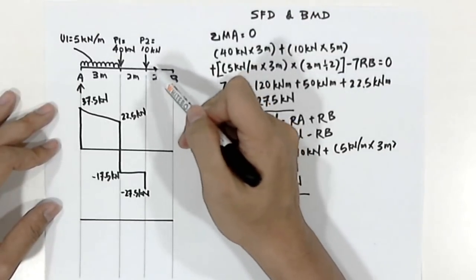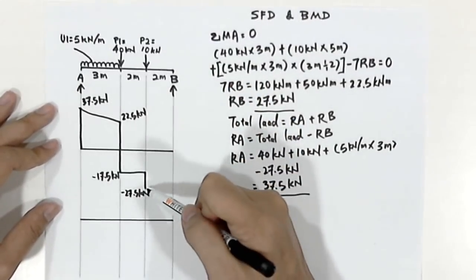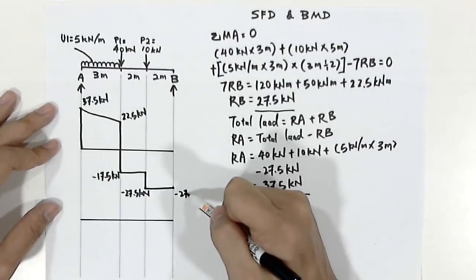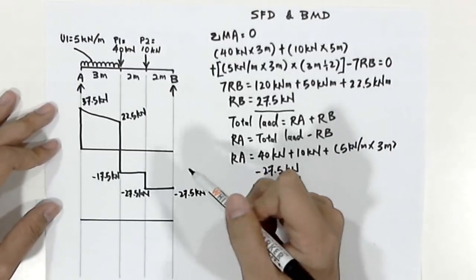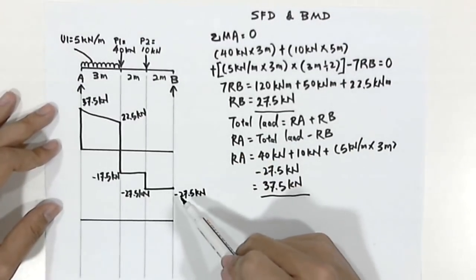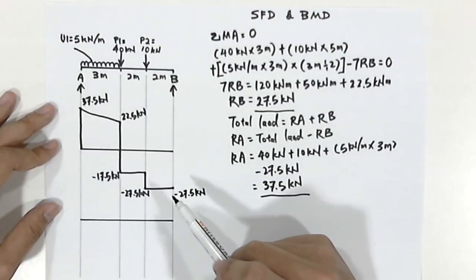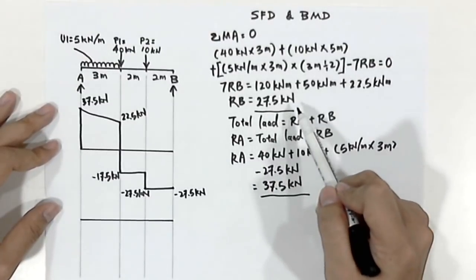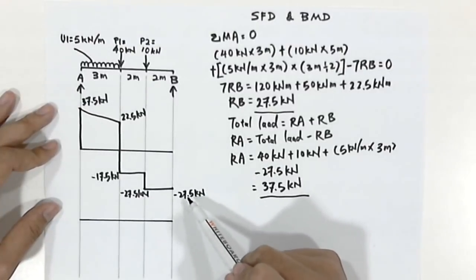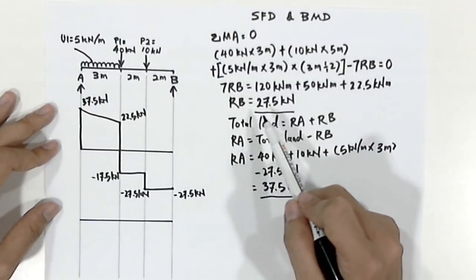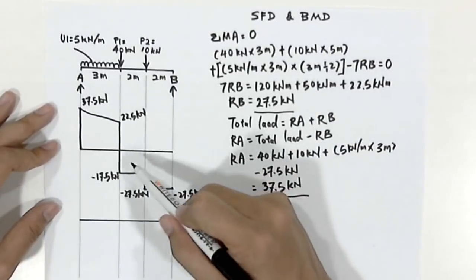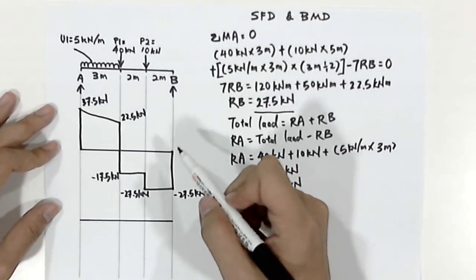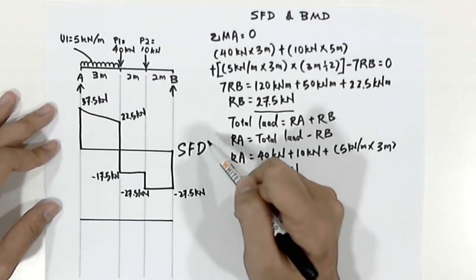There are no more loads acting on the last band, therefore the shear force diagram stays the same and it is still negative 27.5 kilonewtons. At this point we can double-check whether our shear force diagram is correct by checking the last value with our Rb. If you find that the last value, negative 27.5, is the same magnitude as 27.5, that means the whole shear force diagram goes back to 0, and your shear force diagram is correct.